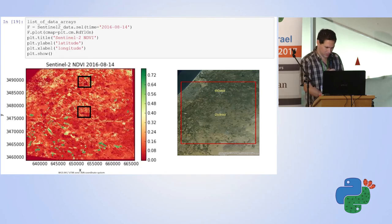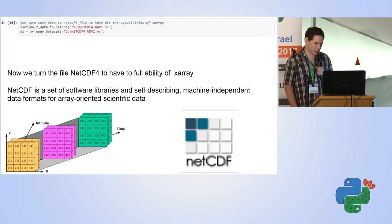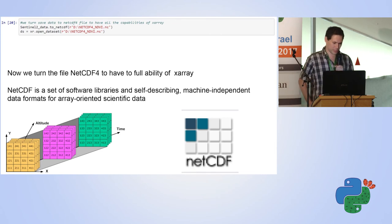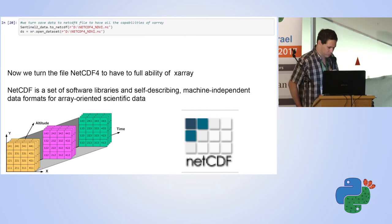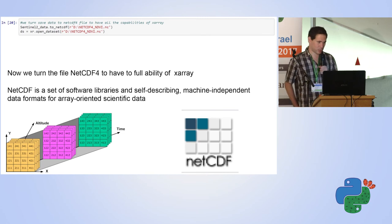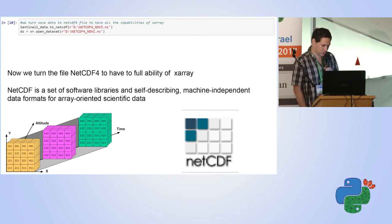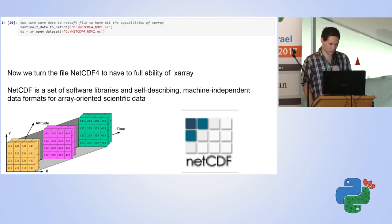For the final part, to use the full ability of xarray, I convert the file to NetCDF4 format. A NetCDF4 file is a format very popular in the geoscience community for storing large climate model data, where you might have a raster data array for each hour over an entire year. It stores all these arrays in one file along with their metadata.